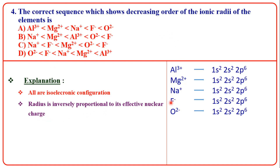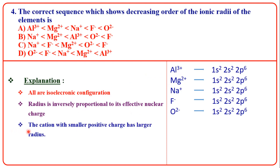The nuclear charges are: Al = 13, Na = 11, F = 9, O = 8. For cations, a cation with a smaller positive charge has a larger radius. So if positive charge increases, the radius decreases. Comparing Na⁺, Mg²⁺, Al³⁺: Na⁺ has the largest radius among the cations.